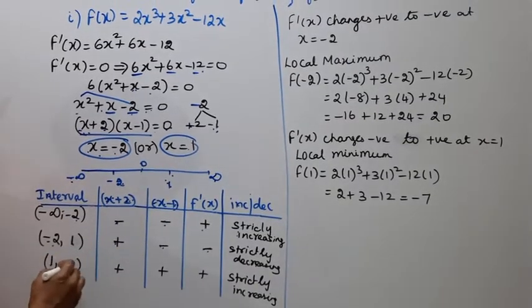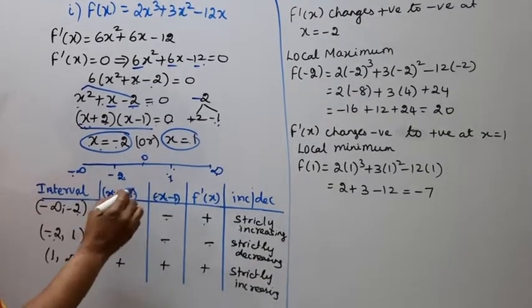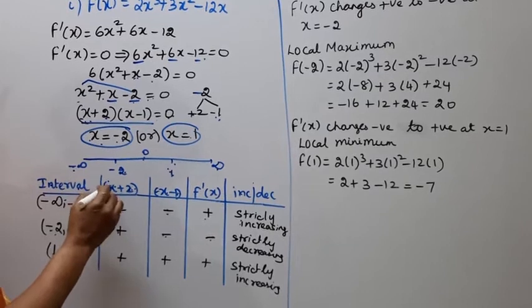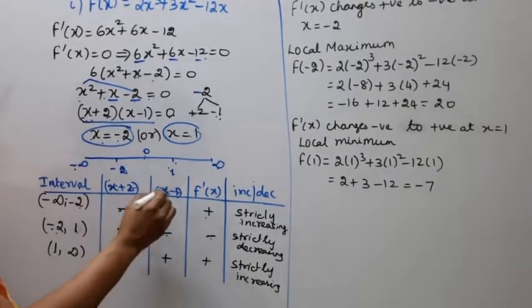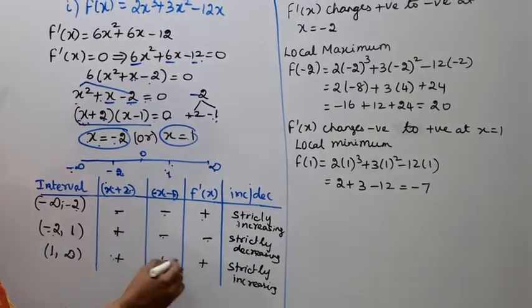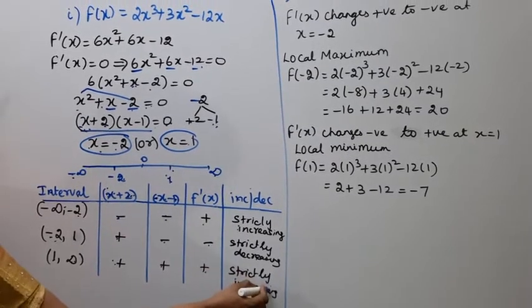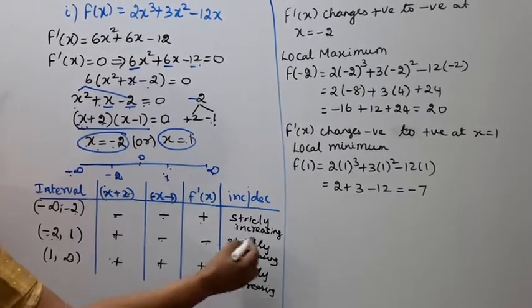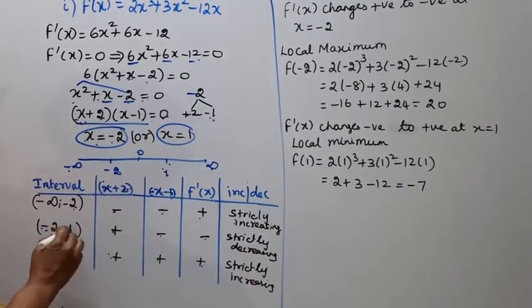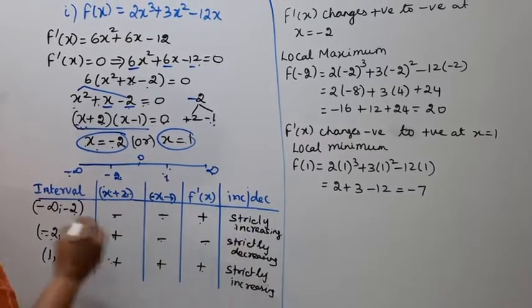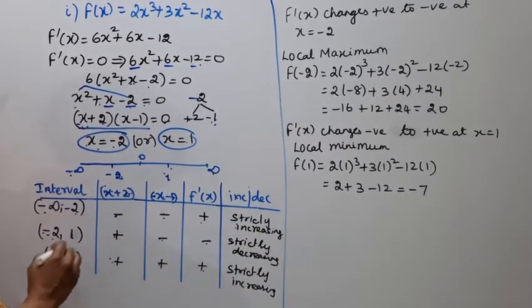1 to infinity, 2 plus 2 plus, 2 minus 1 plus, plus into plus, strictly increasing. Strictly decreasing minus 2 to 1, strictly increasing minus infinity to minus 2, 1 to infinity.